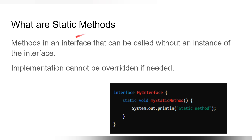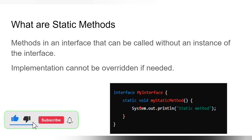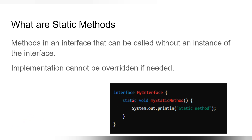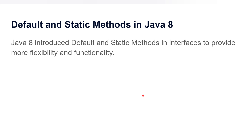The second type of method is a static method. A method in an interface that can be called without an instance of the interface — its implementation cannot be overridden. A method declared using the static keyword is a static method, and its implementation cannot be overridden in a class. Whatever implementation you have provided in the interface can be used by the implementing classes. To call this method you don't need to create an object of the class — it can be called with the help of the interface name.